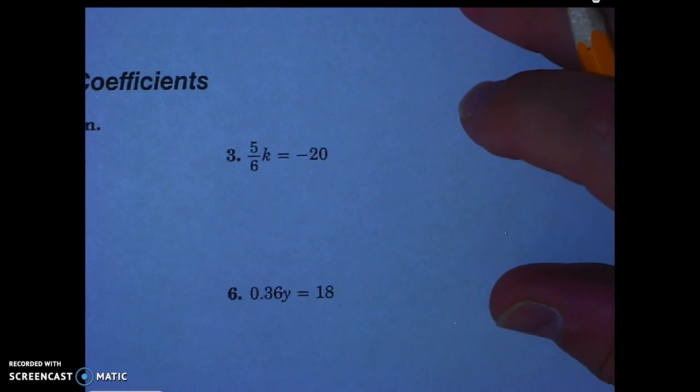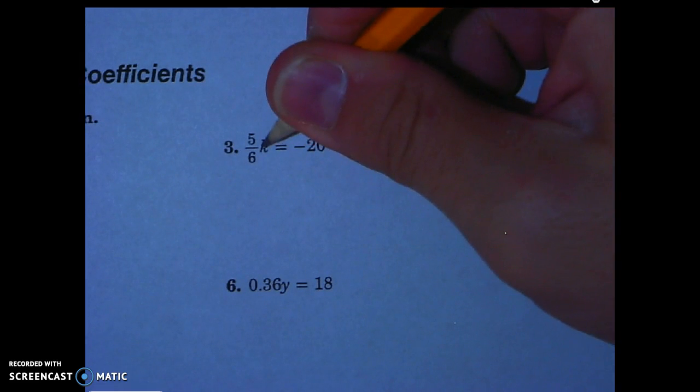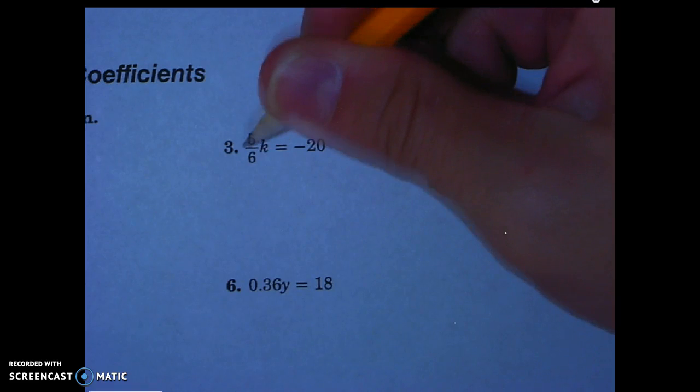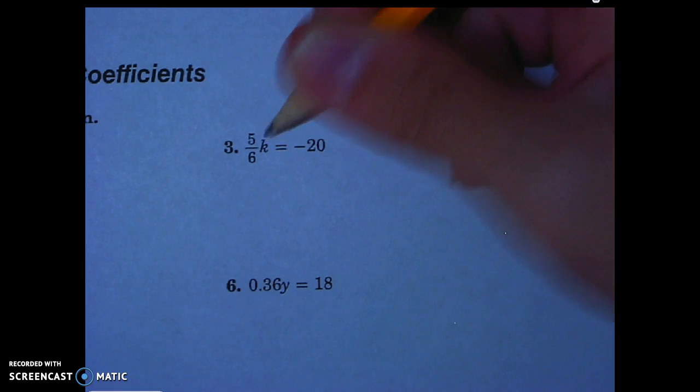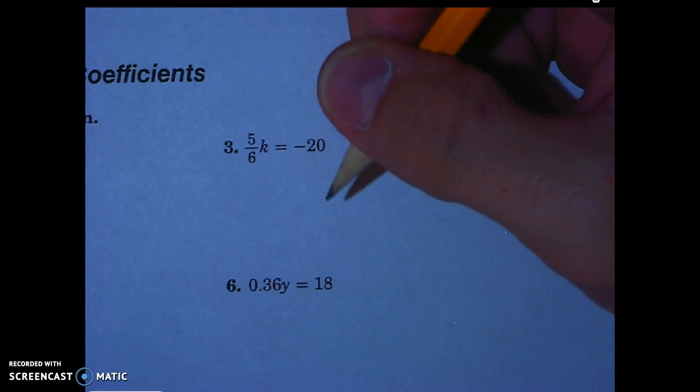Let's look at what number 3 looks like with a fraction. Now, in this one on number 3, it says that my variable is being multiplied by 5 sixths. Well, again, it's always just identifying what's being done to the variable and doing the opposite thing. Since my variable is being multiplied by 5 sixths, I'm going to divide by 5 sixths.